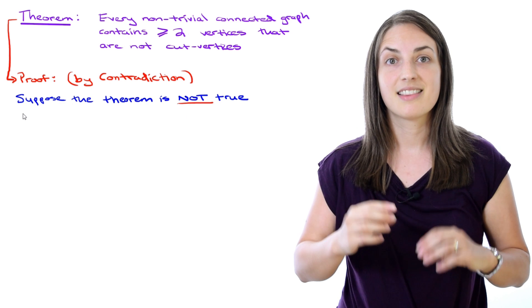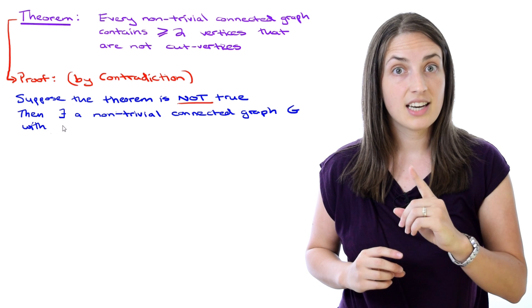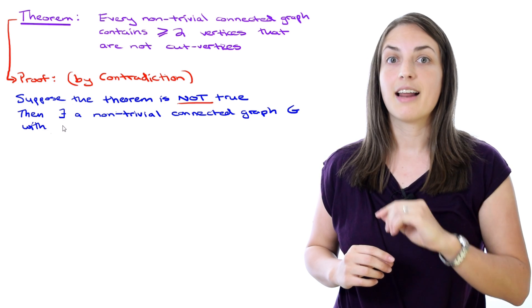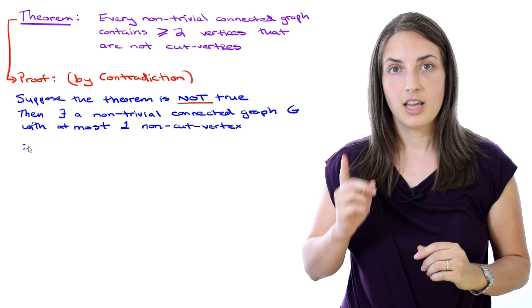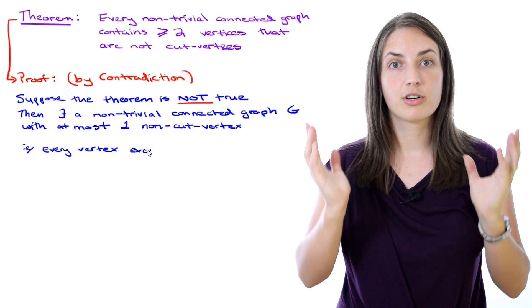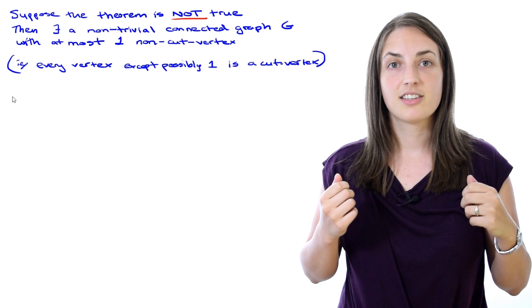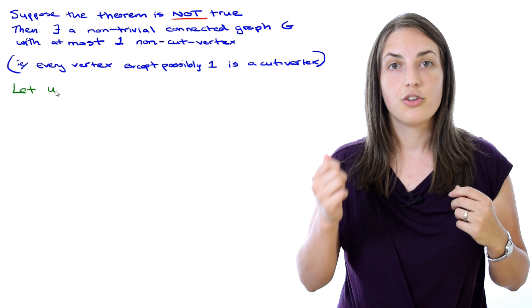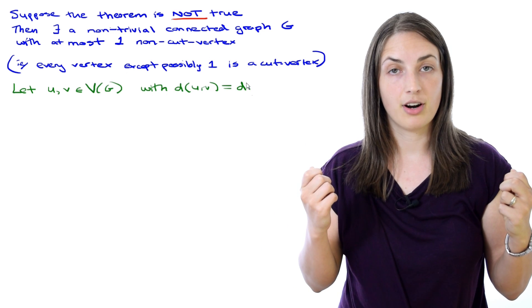That means there must exist a non-trivial connected graph which doesn't have that property. That means at most one vertex is a non-cut vertex. If you think about it, it means that all vertices are cut vertices except possibly for one. The trick is to take two vertices u and v whose distance in the graph is equal to the diameter of the graph.